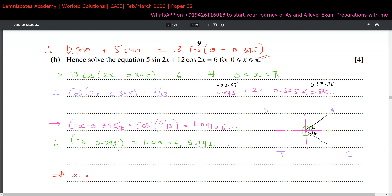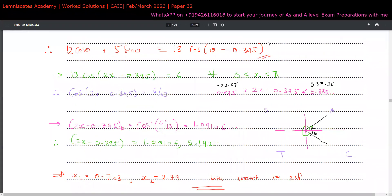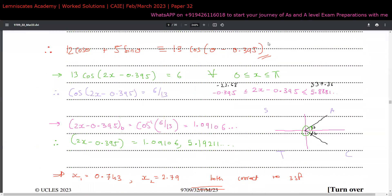Making x the subject by adding 0.395 and dividing by 2: for the first solution, (1.09106 + 0.395) / 2 ≈ 0.743. For the second, (5.19211 + 0.395) / 2 ≈ 2.79. Both values are correct to 3 significant figures. These are the final answers for Part b. There is no Part c, so we're done with Question 6.